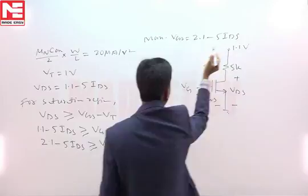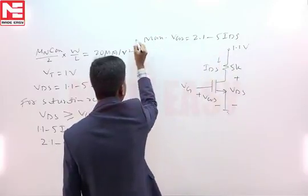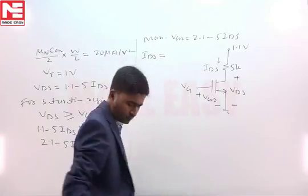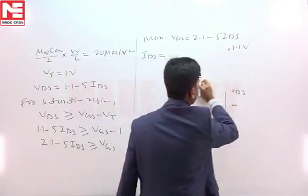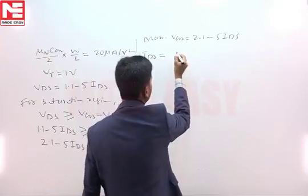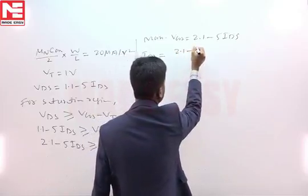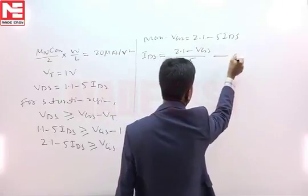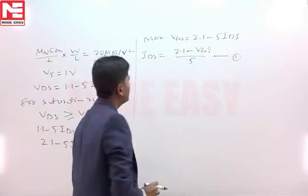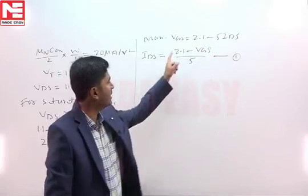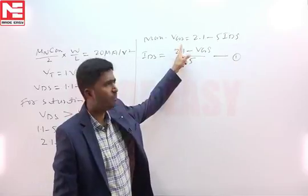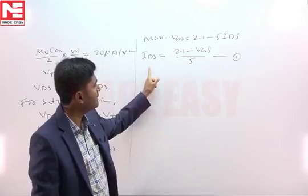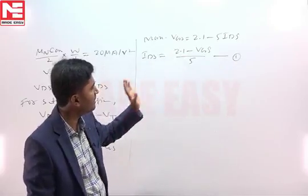If I rearrange it, IDS will become IDS equal to 2.1 minus VGS divided by 5, take it as equation 1. This is the maximum VGS that I can apply and by using that maximum VGS value, I wrote IDS as 2.1 minus VGS divided by 5.